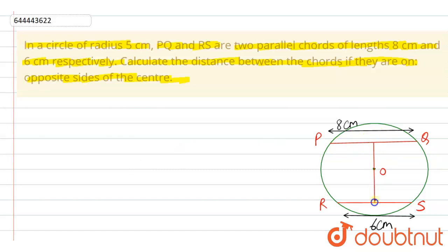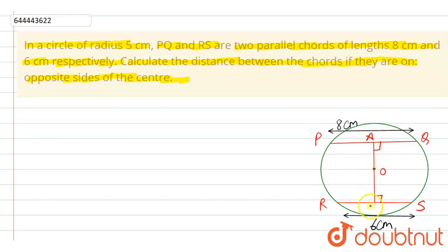If we join a line passing through the center, that line would be the perpendicular bisector of these two chords. We suppose this point is A and this point is B.